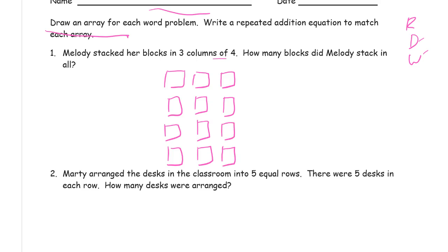So you can do it this way. You either draw the column first or you can draw the first row. And we're counting columns of four. So melody stacked twelve blocks. Now if you wanted to, you could have also written three fours. You could have also added four threes. That would have worked also.